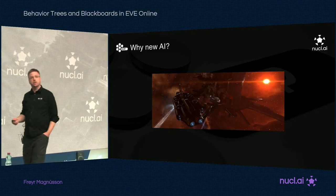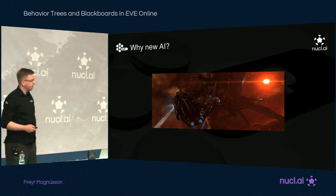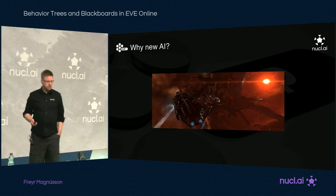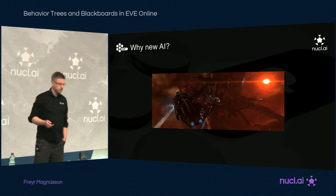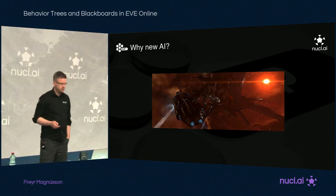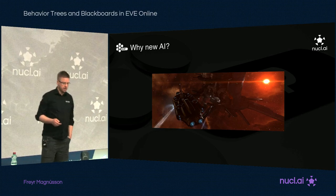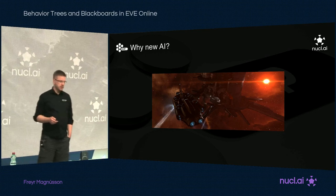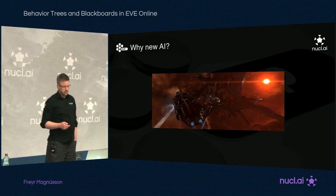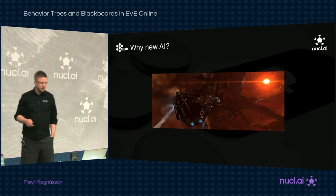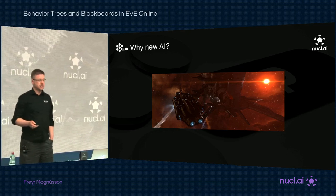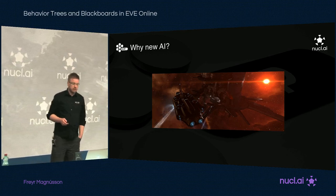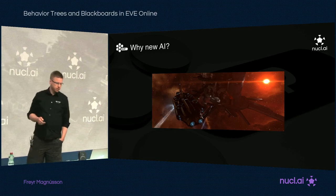Why did we want to introduce new AI into EVE Online? We wanted to create new NPCs that behaved in ways our current system just didn't support. We wanted to make them roam around the solar system, explore, and engage in non-combat activities that our default NPCs just weren't capable of doing. And the current existing AI was in a pretty sorry state — so bad, in fact, that we really struggled to make any meaningful changes without breaking everything.